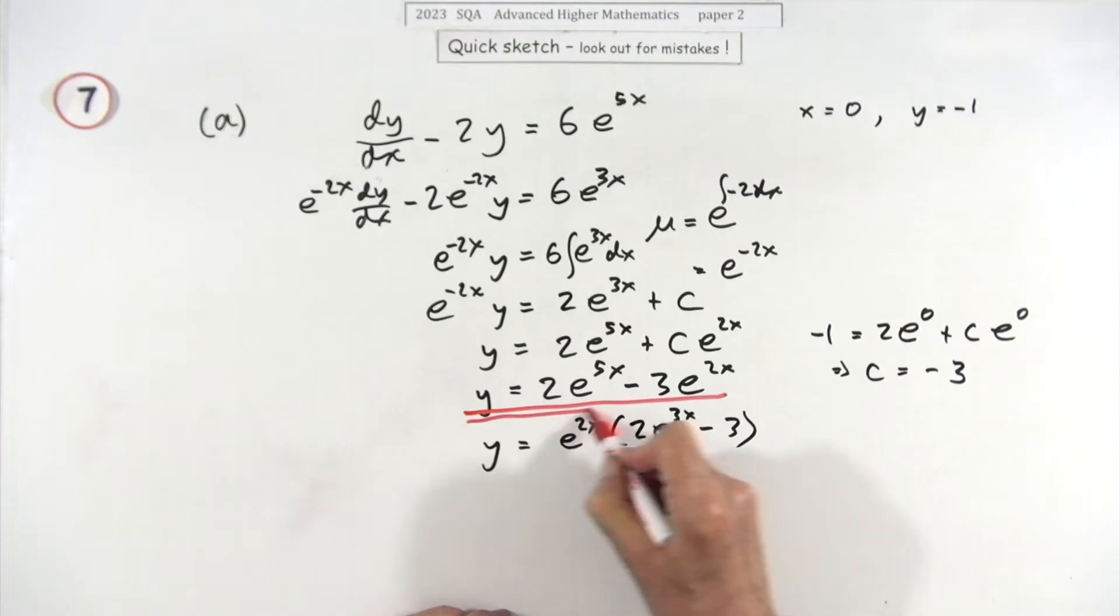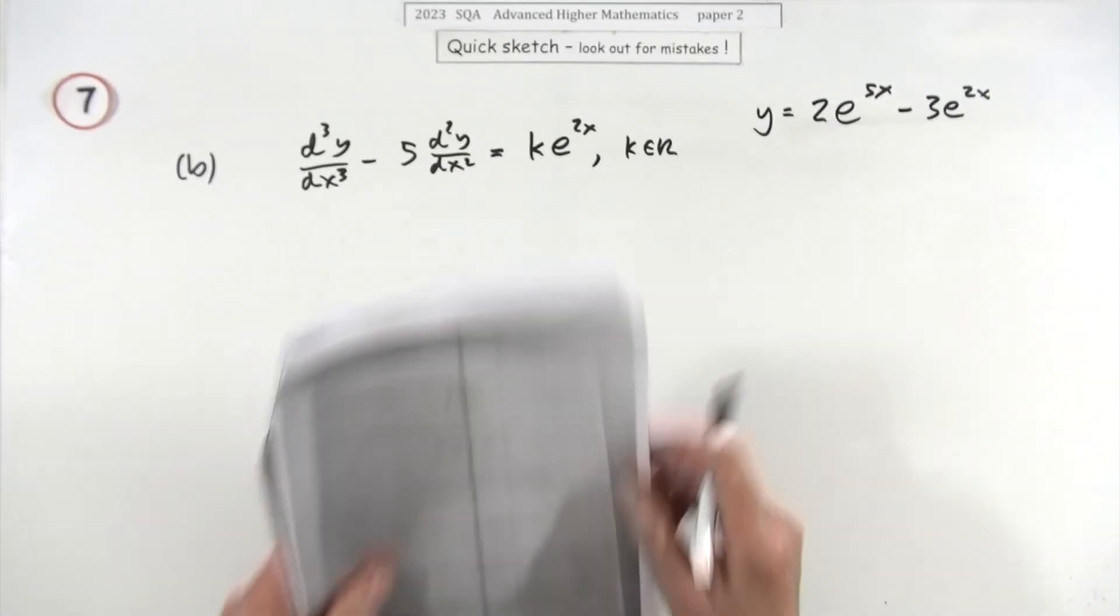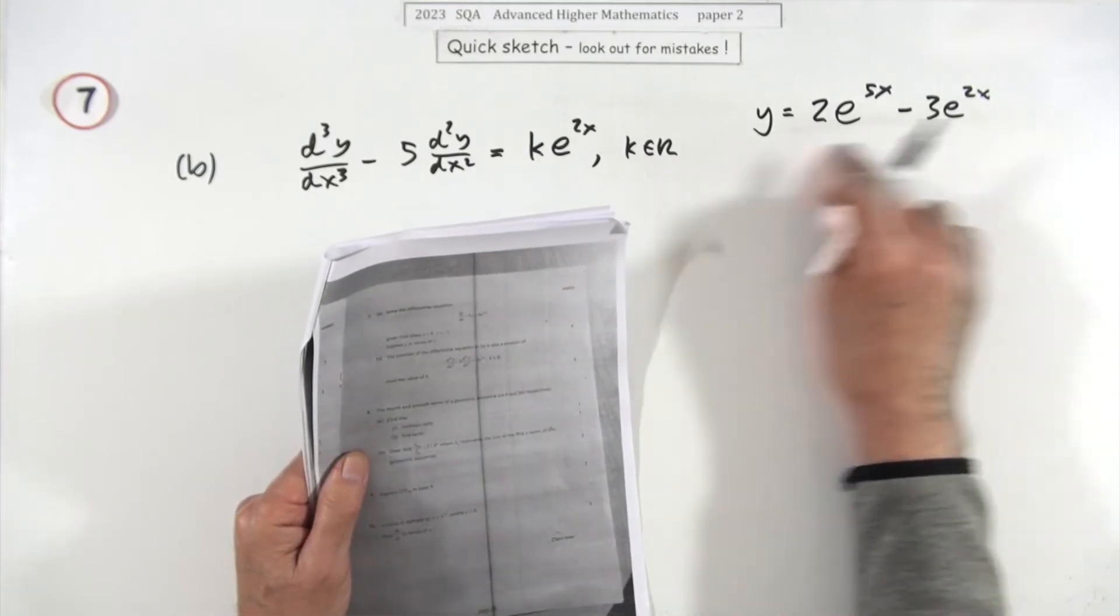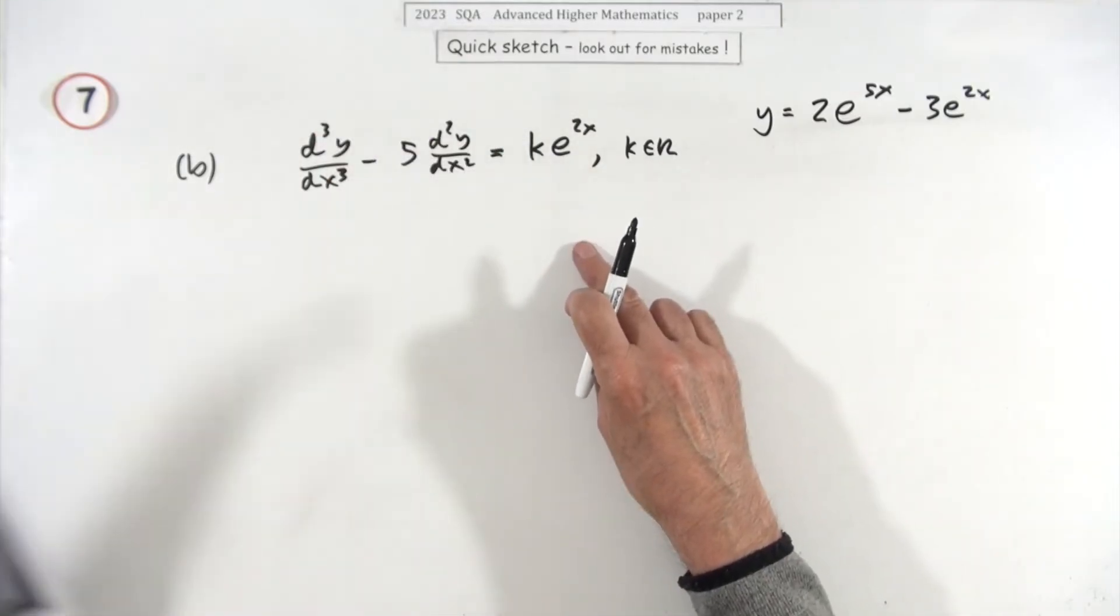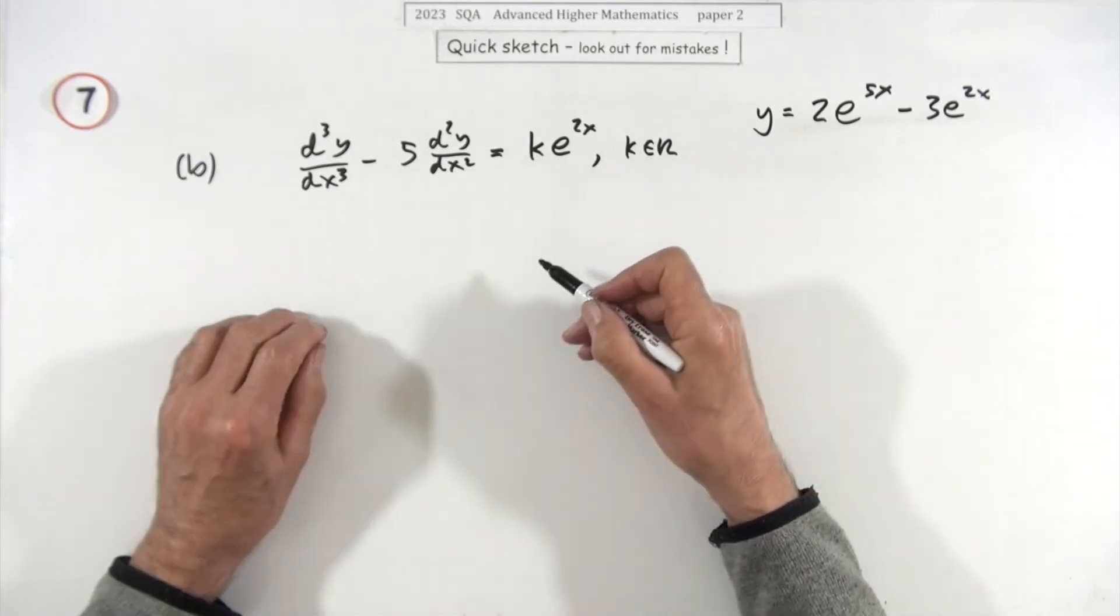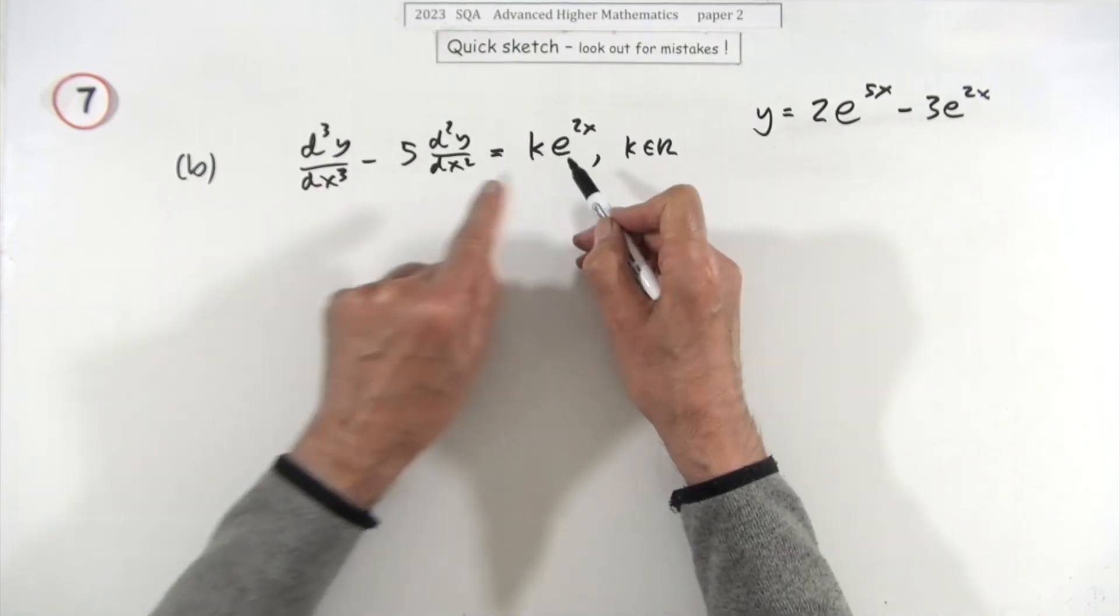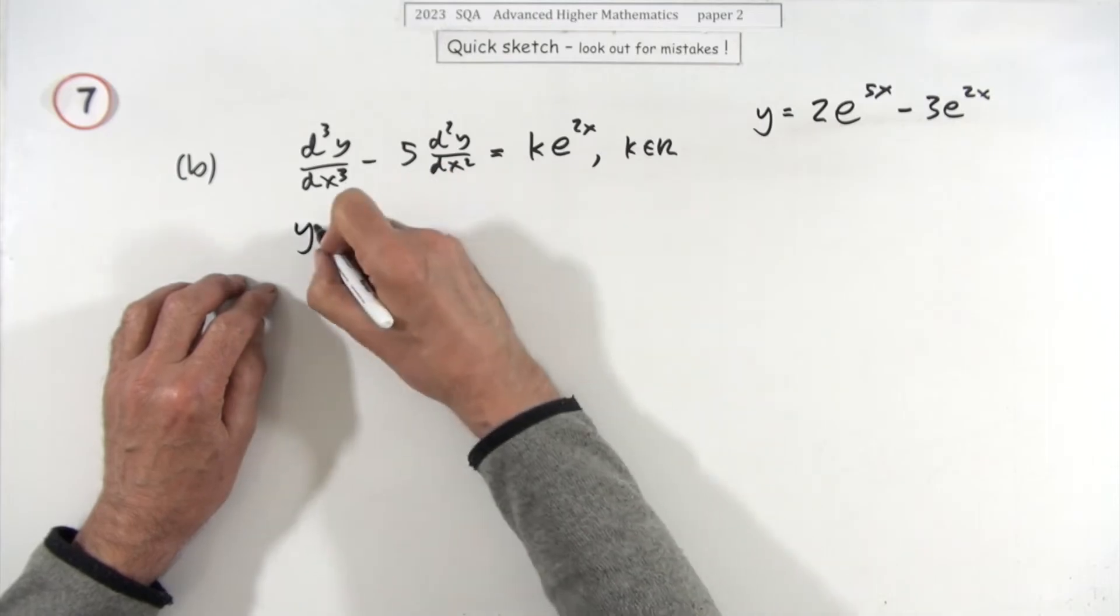So part b, for two marks. The solution to that differential equation, this one here, also solves this third order one. If that's the case, what's the value of k? Well, just the same as when you're doing your second order ones: if that's the solution, it means if you were to feed it through this, it should produce this result. So I'll just need the derivatives to feed them in.